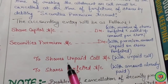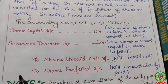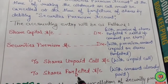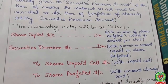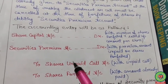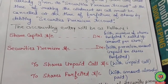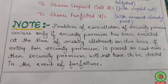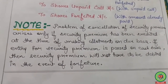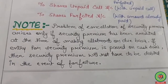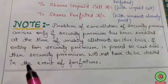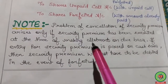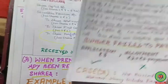Two accounts are debited: Share Capital Account and Security Premium Account. Security Premium is debited because at the time of allotment it was originally credited. The credit side includes: Calls in Arrears (allotment and first call not paid) and Share Forfeited Account for the amount already received. Note: the problem of cancelling security premium arises only if it was created on a due basis at allotment. If the entry was passed on a cash basis, then security premium need not be debited at forfeiture.